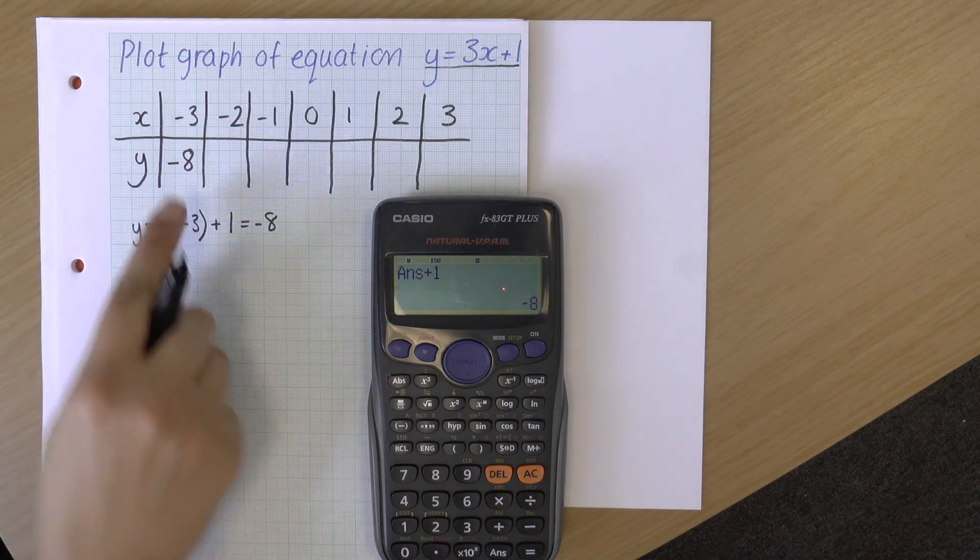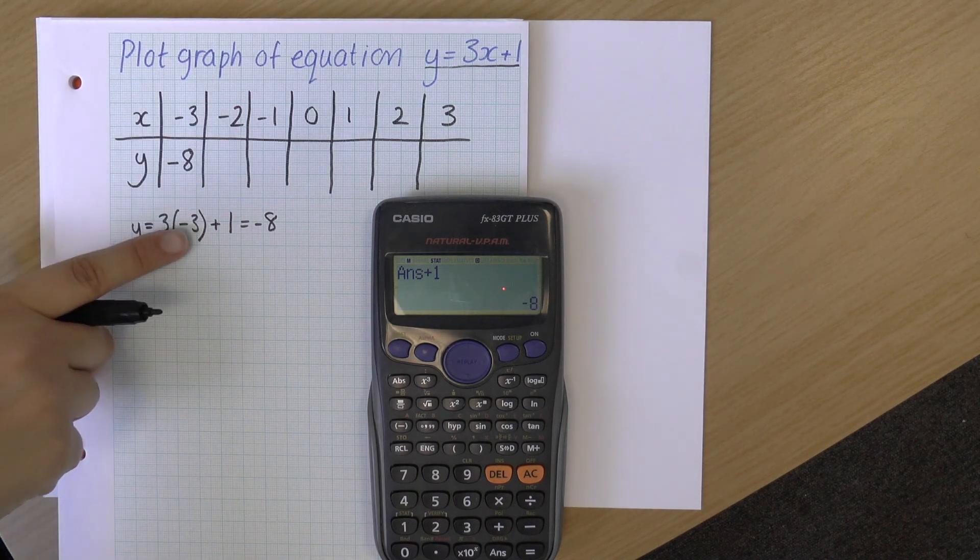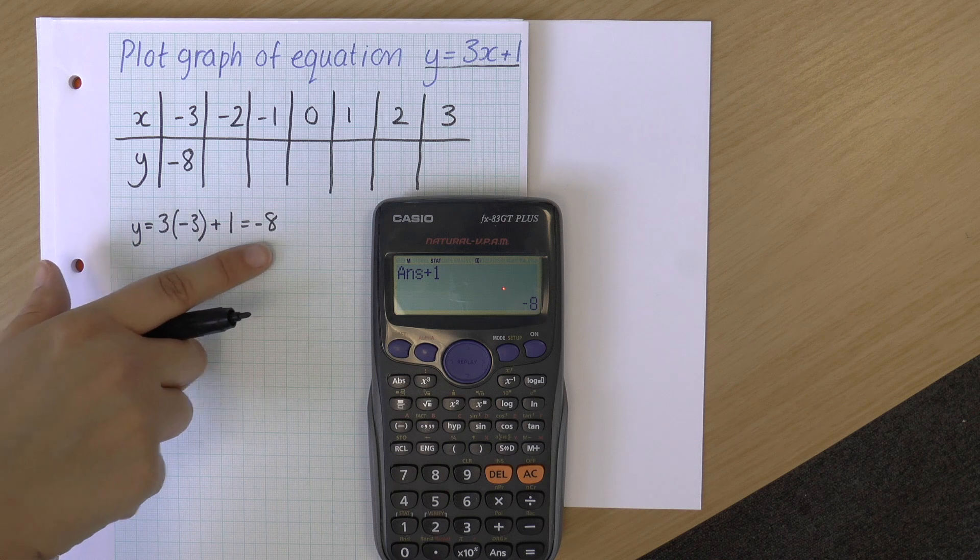So I'm going to do 3 times minus 3 equals, and then add 1 equals, which gives me minus 8. And that is my y value. So that is minus 8. So that's my first one. When x is minus 3, my y value is minus 8.